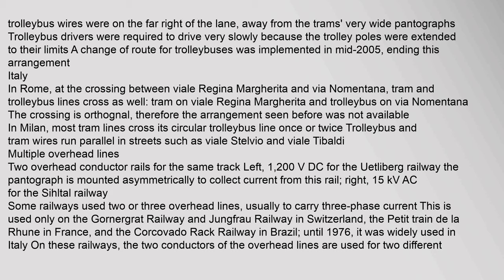In Rome, Italy, at the crossing between Viale Regina Margherita and Via Nomentana, tram and trolleybus lines cross — tram on Viale Regina Margherita and trolleybus on Via Nomentana. The crossing is orthogonal, so the previously described arrangement was not available. In Milan, most tram lines cross its circular trolleybus line once or twice, and trolleybus and tram wires run parallel in streets such as Viale Stelvio and Viale Tibaldi.